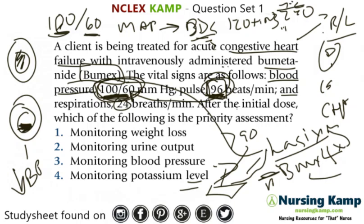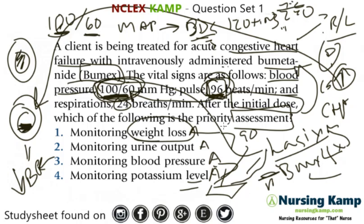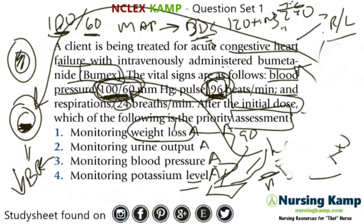After the initial dose of Bumex, the risk is decreased fluid and decreased blood pressure. The question asks: which of the following is a priority assessment? Assess weight loss, assess urine output, assess blood pressure, or assess potassium level. Weight loss is not really that acute — it's more relevant in a phone-call scenario about weight gain for CHF at home, so we eliminate that.